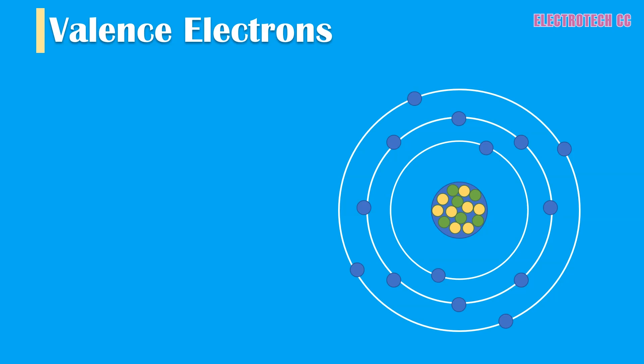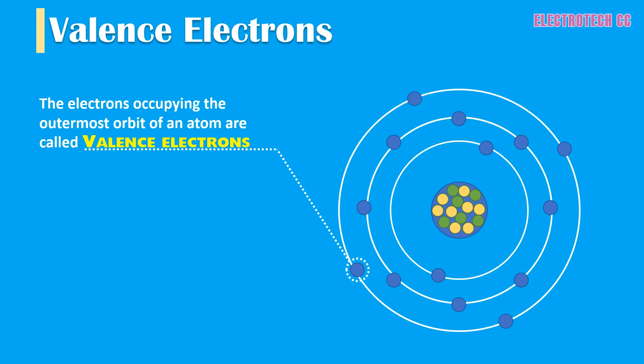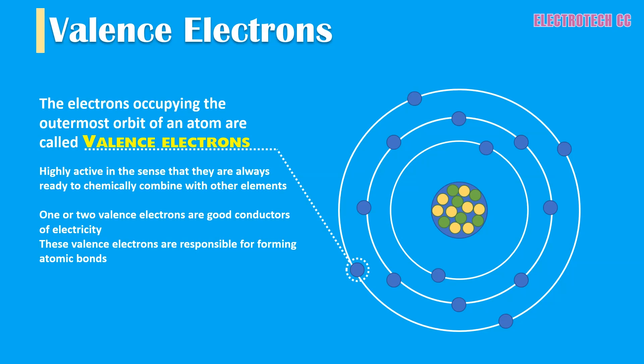The electrons occupying the outermost orbit or shell of an atom are called valence electrons. They determine the chemical and electrical properties of the element. Valence electrons are highly active in the sense that they are always ready to chemically combine with other elements. Thus elements which have one or two valence electrons are good conductors of electricity. Valence electrons are responsible for forming atomic bonds. The number of valence electrons in an atom also determines the valency of the element. For example, boron is trivalent, whereas silicon and germanium are tetravalent—that is, they have four valence electrons each.